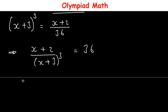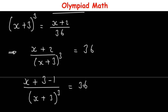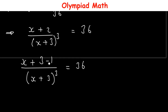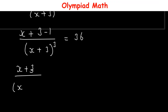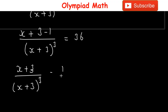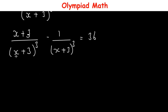With this, we can express x+2 as (x+3) - 1, so (x+3-1)/(x+3)³ = 36. If we split this fraction, we have (x+3)/(x+3)³ minus 1/(x+3)³ = 36.